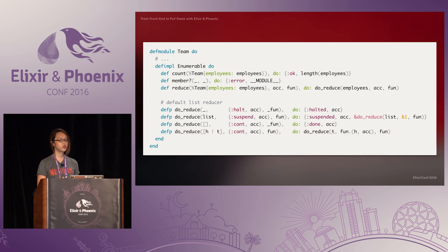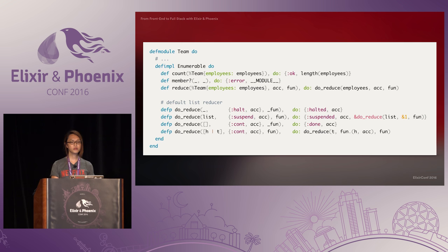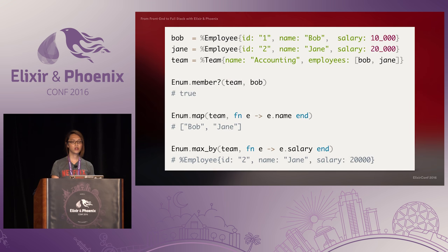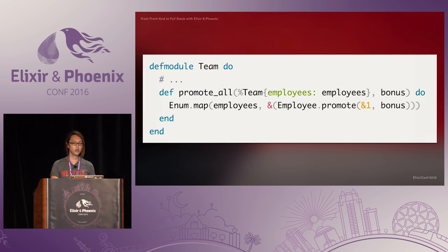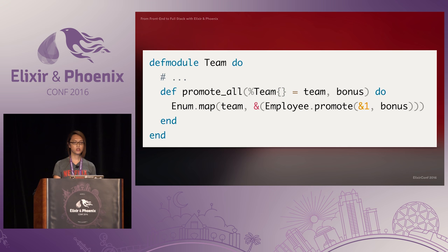Let's fully implement the Enumerable protocol. The member implementation returns a tagged tuple with the error atom and the module reference, deferring to the default membership algorithm. The reduce implementation just grabs the employees key off the struct and uses the default list reduce function. Now we can use all our enumerable functions on our team struct, which is really cool. Many of the enumerable functions that ship with Elixir use the reduce function under the hood, so you don't have to implement every single function — only count, member, and reduce are actually required. For example, a function to promote all employees can now map over the team itself directly instead of over the employees key in the struct.